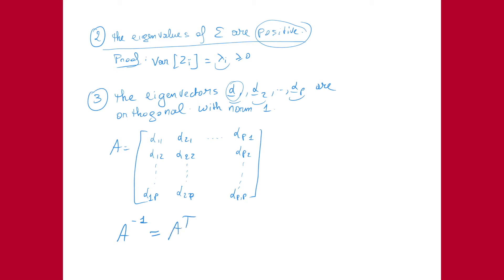To recapitulate: we start from a covariance matrix Sigma, calculate the eigenvectors and eigenvalues, and find that the eigenvalues are positive, the eigenvectors are orthonormal, and the inverse of matrix A equals its transpose. I use the prime notation for the transpose.